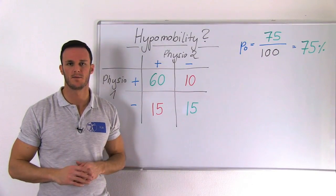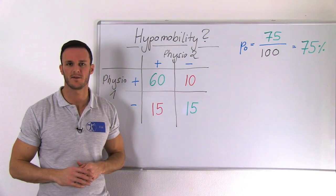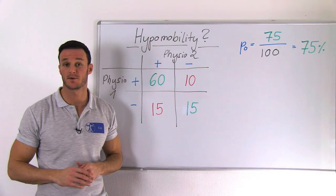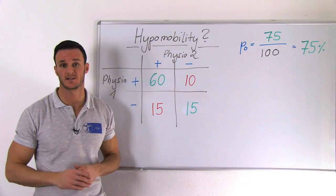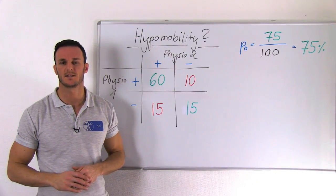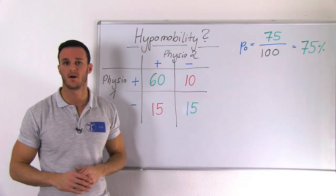However, if both of them randomly evaluate the patients, they would sometimes agree just by chance. The Kappa value takes this chance into account.